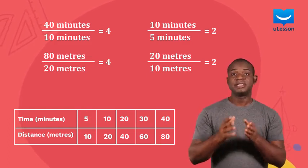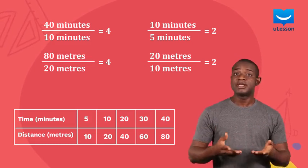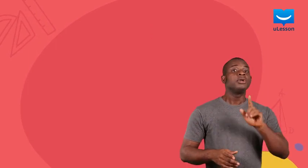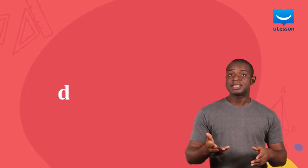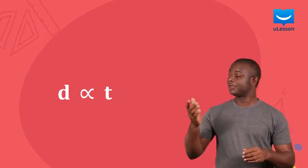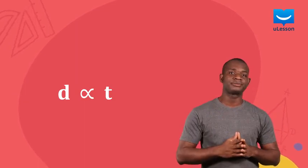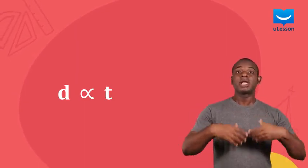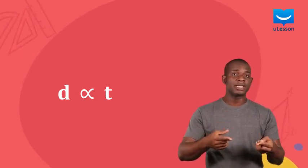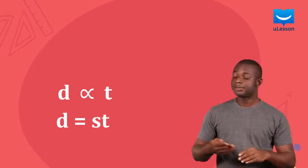Since the changes in the distance covered and the time taken are the same, we can say that distance is directly proportional to time. Using D to represent distance and T to represent time, we can write the relationship like this using the proportionality symbol. The proportionality symbol can be changed to an equality sign by introducing a constant. Let's call it S. Hence, the relationship becomes this.